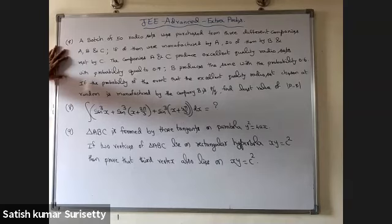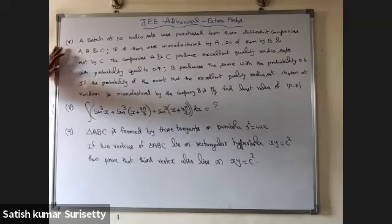Ninth problem: triangle ABC is formed by three tangents to the parabola y² = 4x. If two vertices of triangle ABC lie on the rectangular hyperbola xy = c², prove that the third vertex also lies on xy = c².